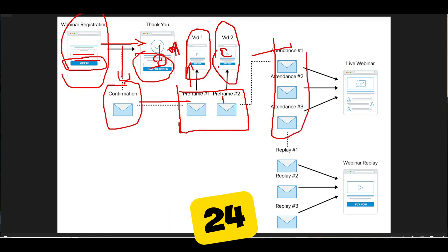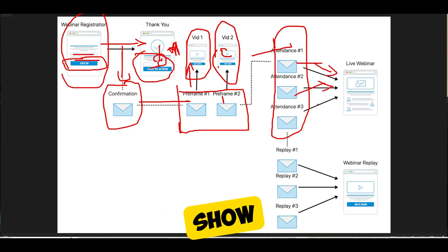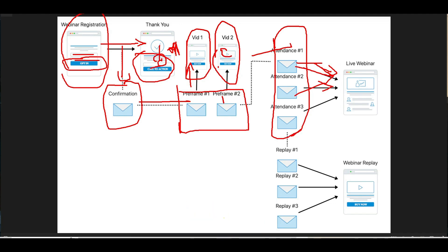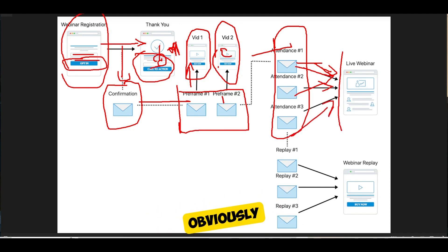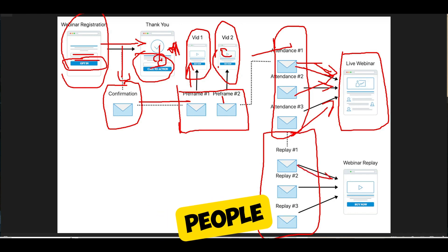Then it transitions into your attendance sequence. The day of your webinar — even 24 or 48 hours before — you want to start sending people emails so that they show up. The biggest problem with webinars right now is show-up rates. It's really hard to get people to show up, especially in the internet marketing space, because people know it's just a big sales pitch. You need a strong attendance sequence to push people to your live webinar. If they don't take action, you definitely want to send them the replay with a replay sequence.